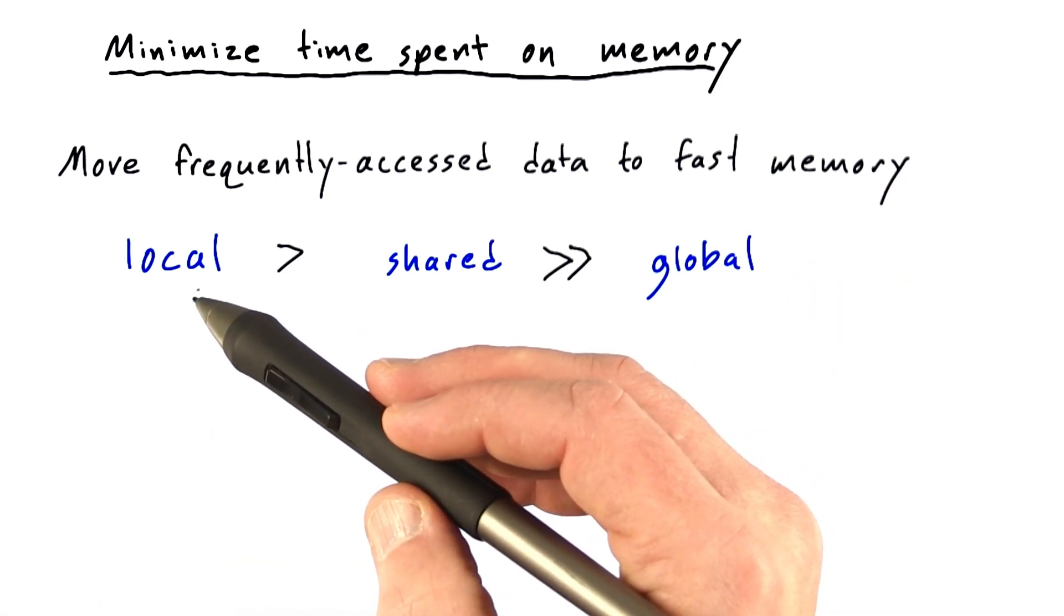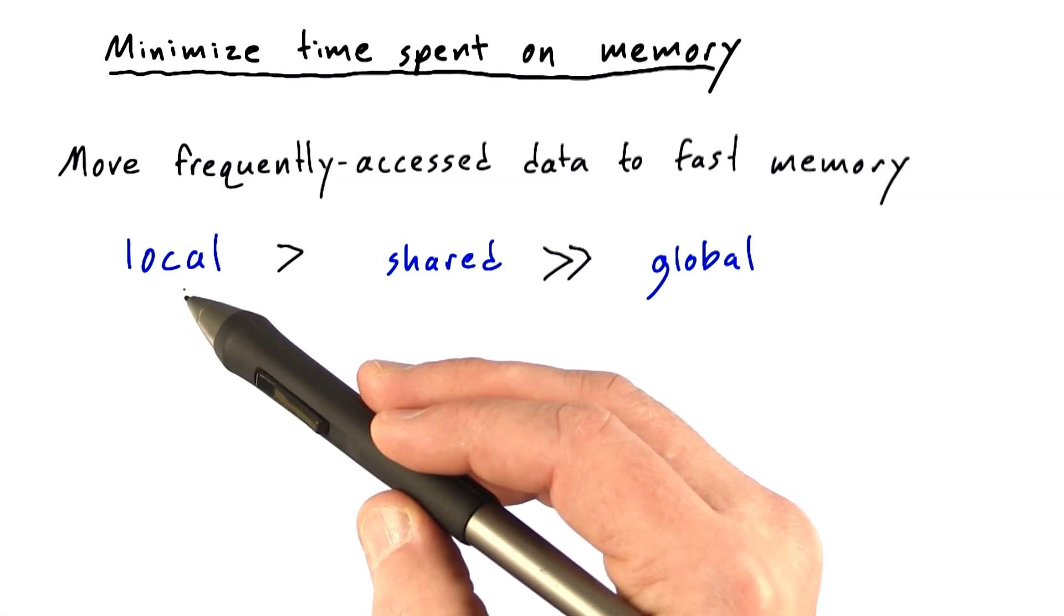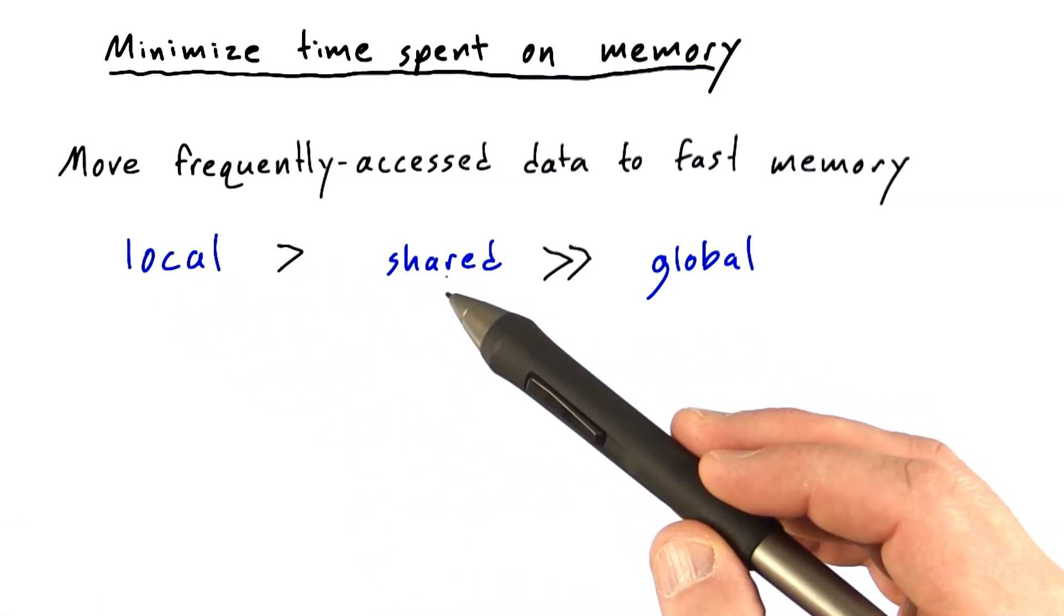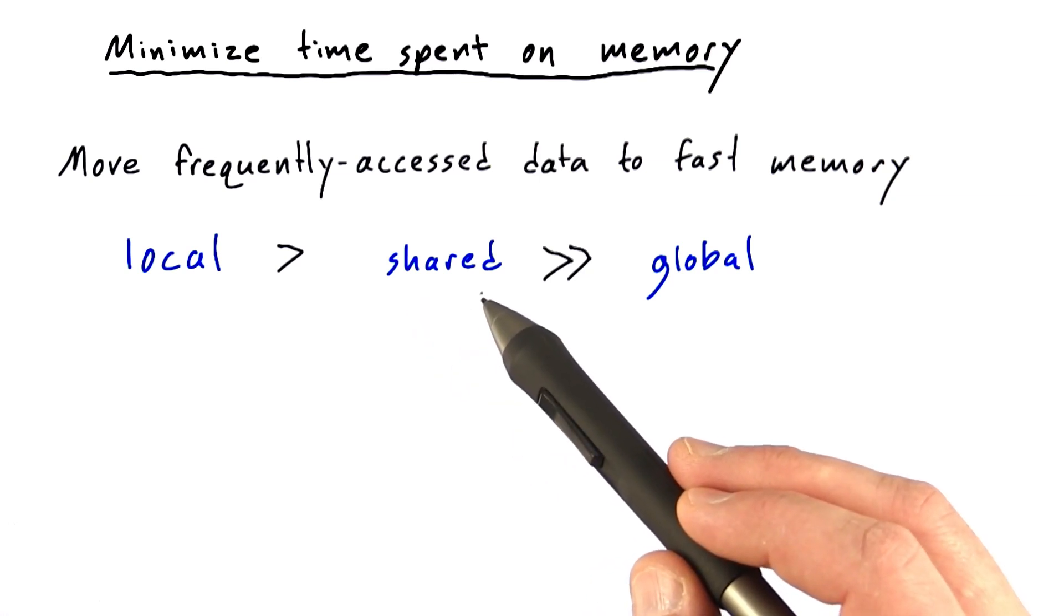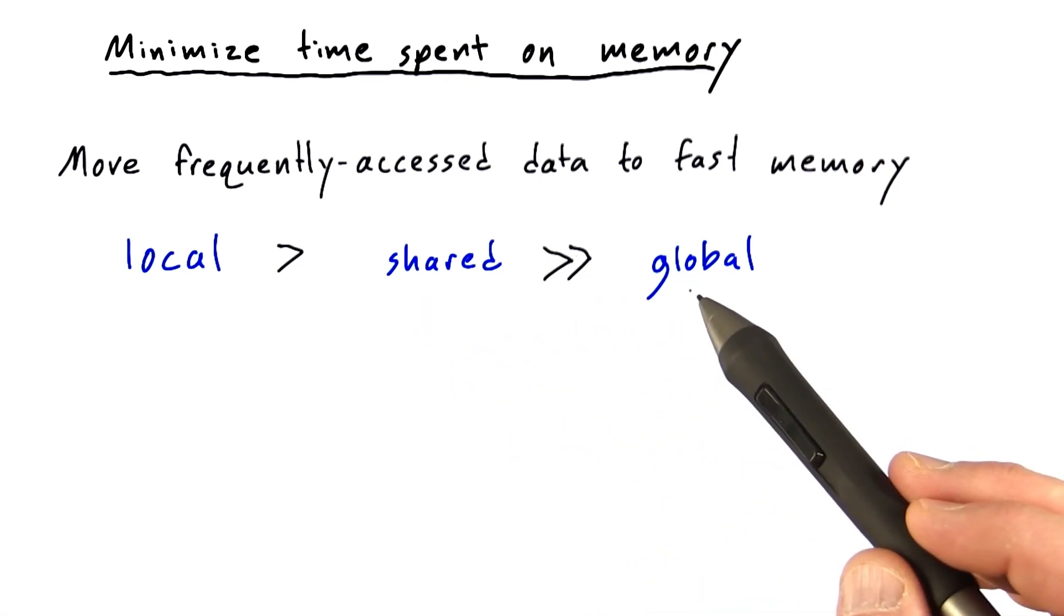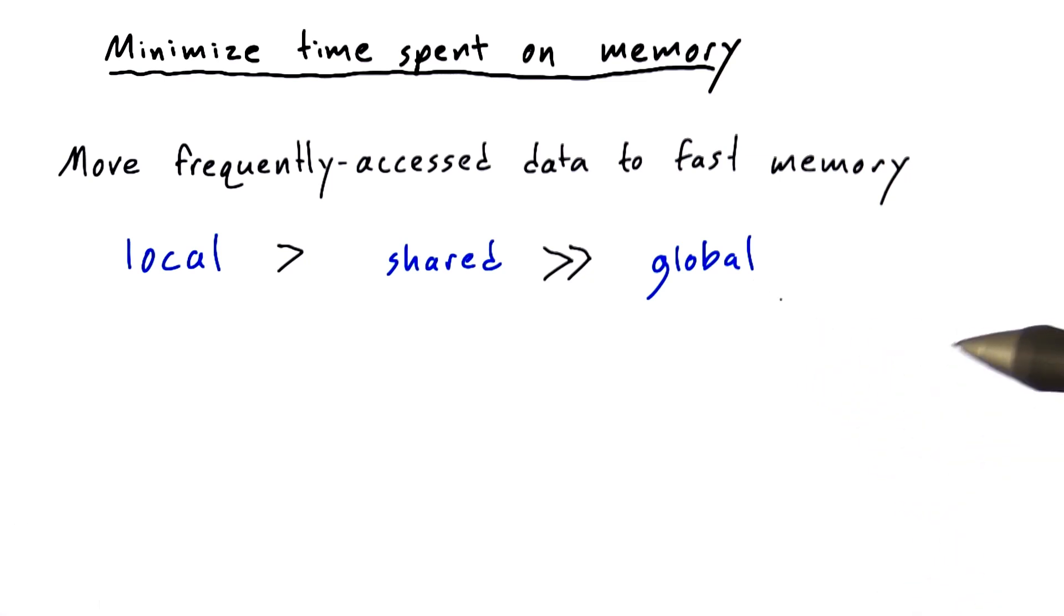But in general, data that is kept local to a thread is going to be about as fast as possible. And data that is shared in a thread block's shared memory is going to be very fast. And data that is way out in global memory is going to be a lot slower, although this is still much faster than CPU memory, also known as host memory.